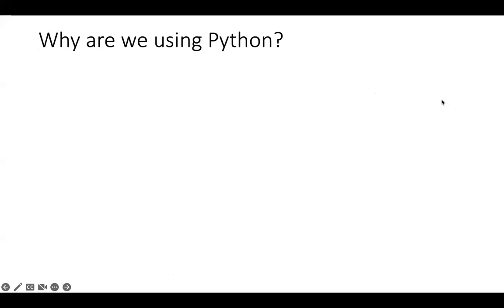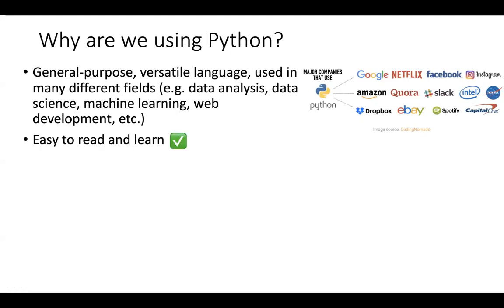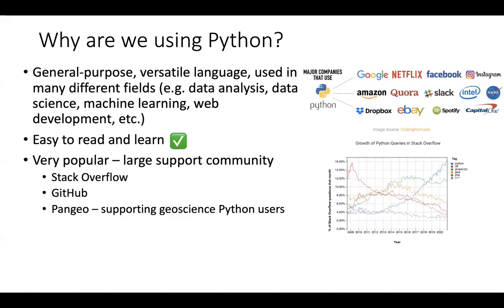So why are we using Python? Python is a very general-purpose, versatile language used in many different fields — data analysis, data science, machine learning, web development, and more. Many companies across different industries use it. It's considered very easy to read and learn, making it a great introductory language. It's also very popular, which means there's a large support community you can turn to with questions.